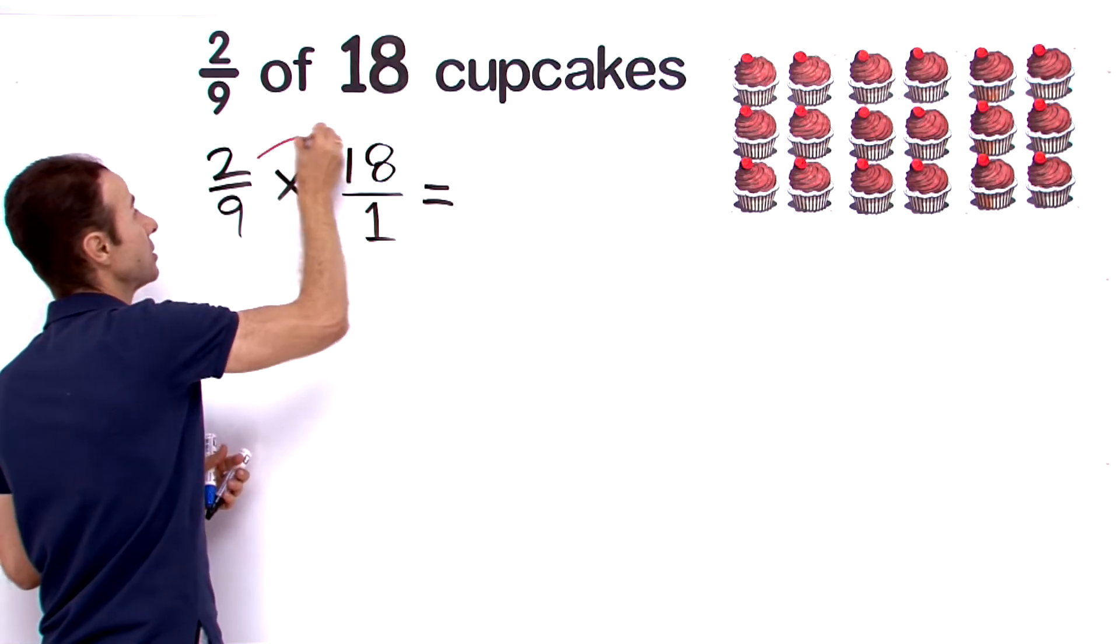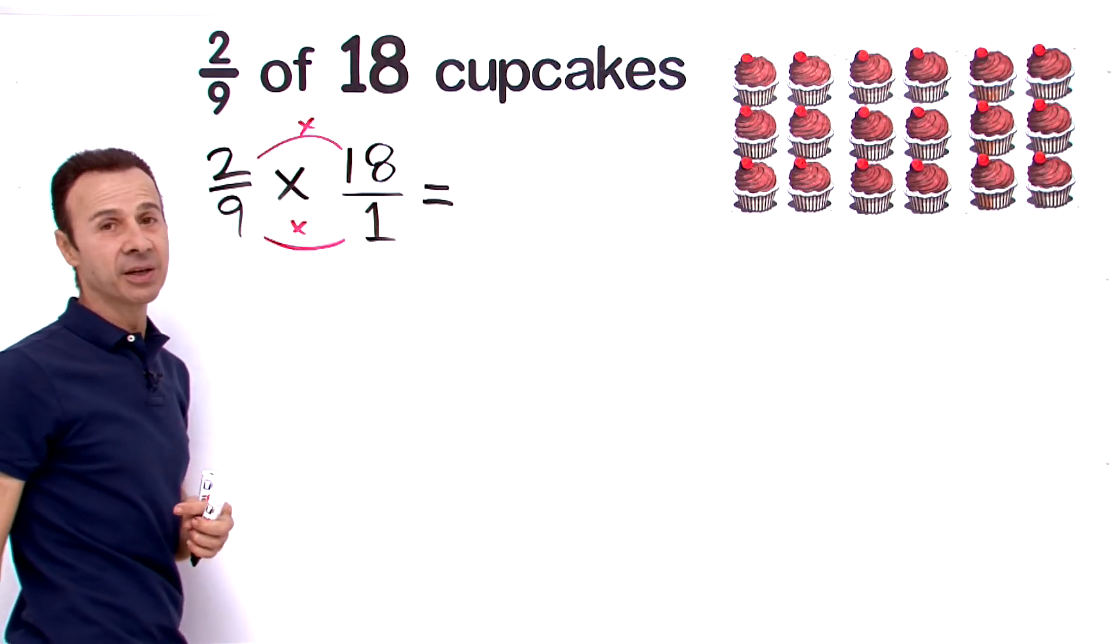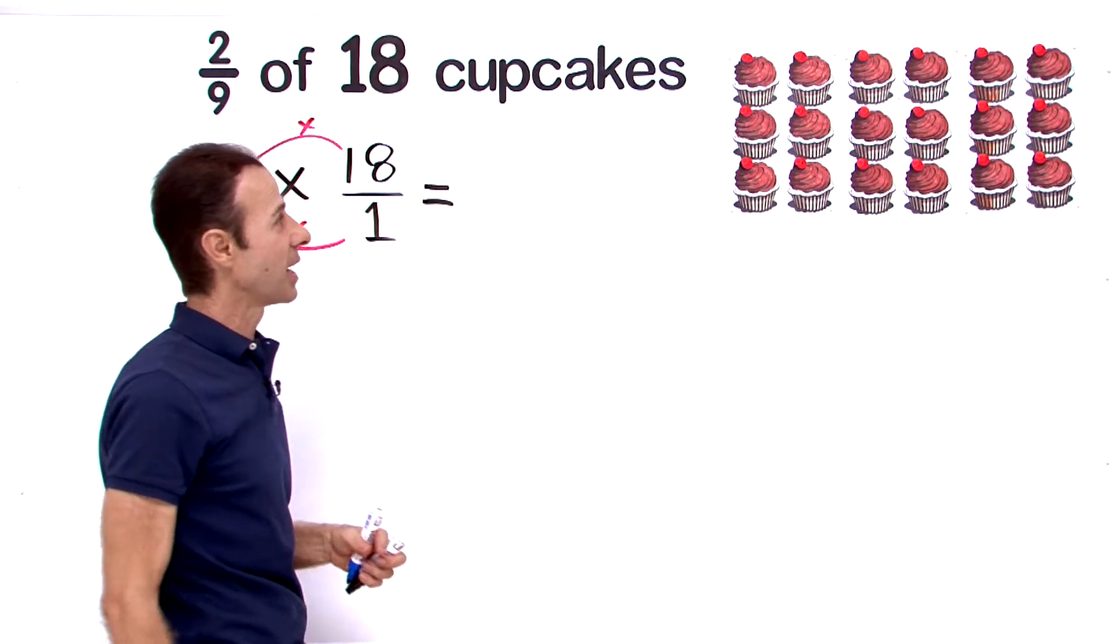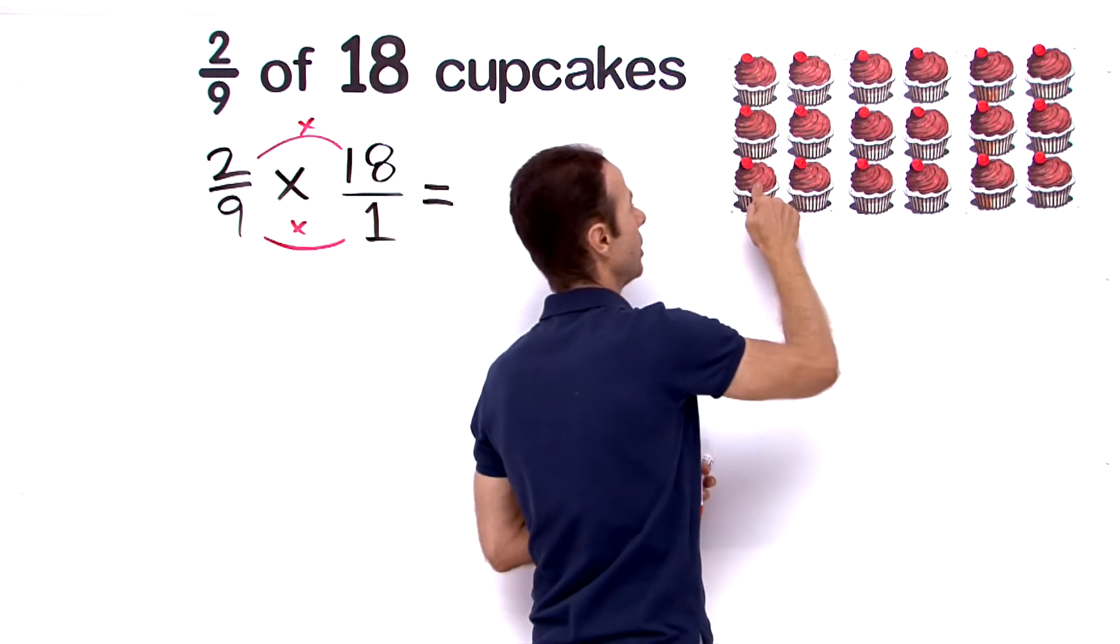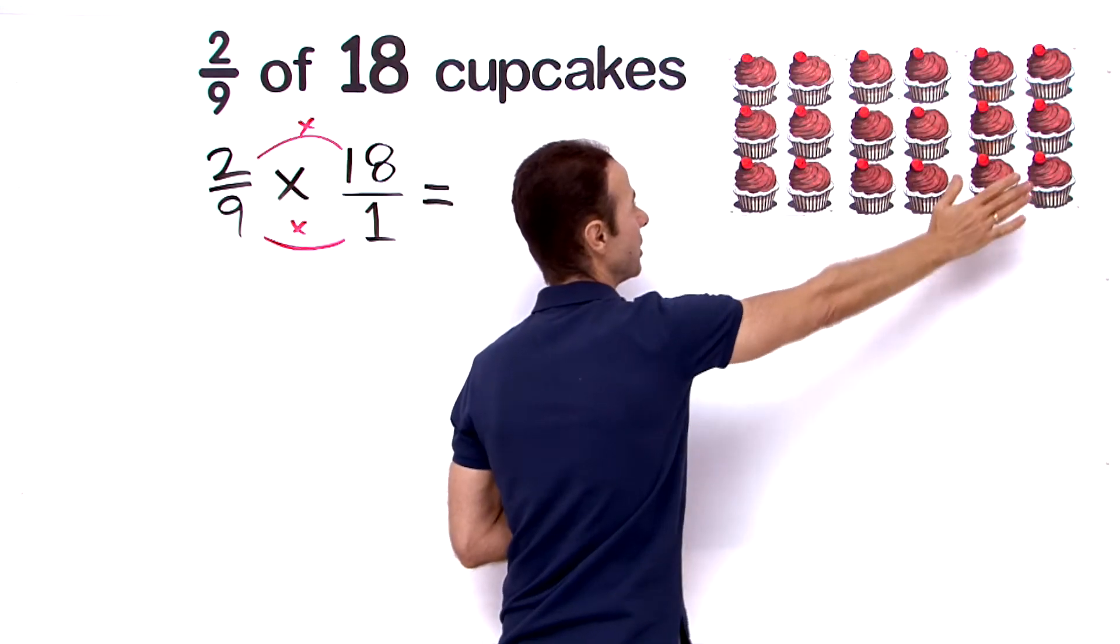So let's multiply these to work out what 2/9 of 18 cupcakes is. There's 18 cupcakes there: 1, 2, 3, 4, 5, 6—6 times 3, that's 18 cupcakes.